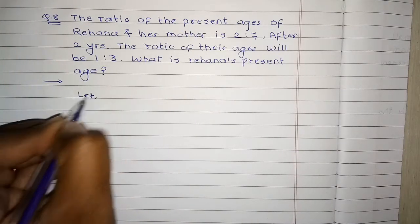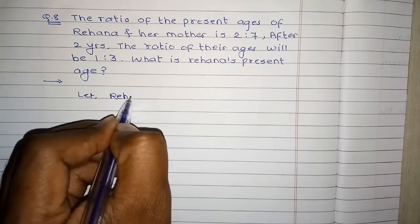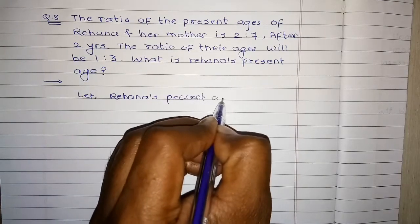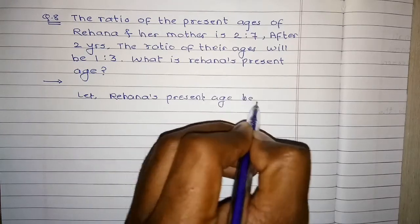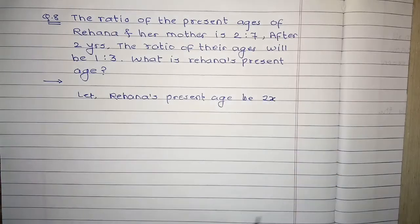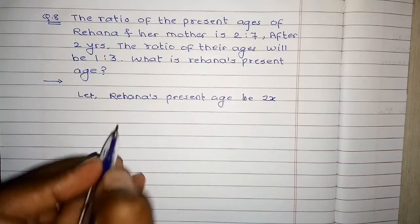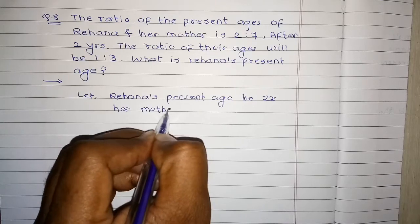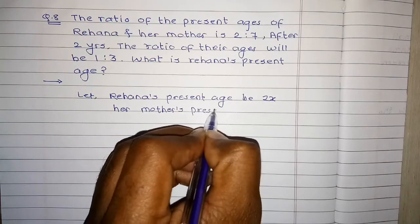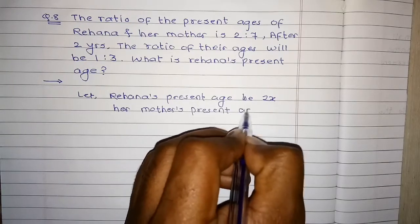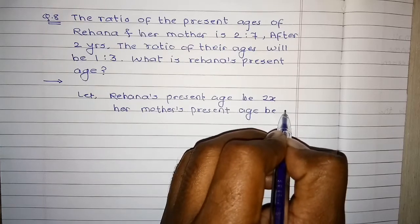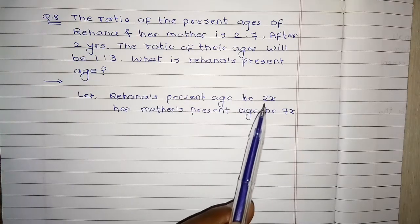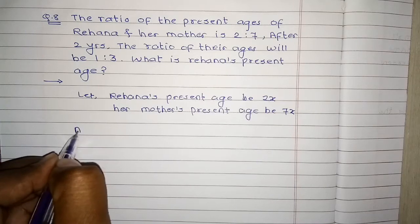हम क्या करेंगे, एक common multiplier इनके साथ multiply करेंगे और उनके present ages को consider करते हैं। Let Rehana's present age be 2x and her mother's present age be 7x. ओके, तो उनके present ages हमने consider कर लिए हैं 2x and 7x.